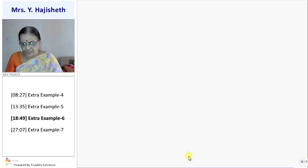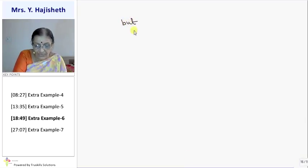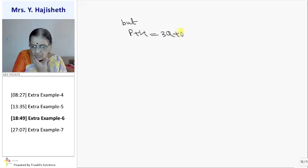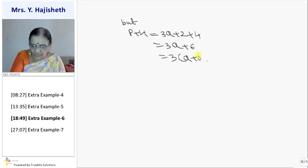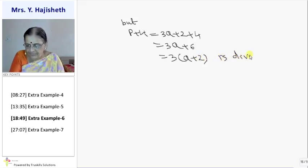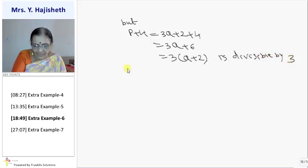Now let us check p plus 4. Dekho, two not divisible aaya, toh third toh divisible ana hi chahiye. P plus 4 is 3q plus 2 plus 4. So it is 3 times q plus 2. When 3, it is q plus 2. Is divisible by 3.